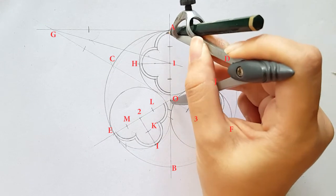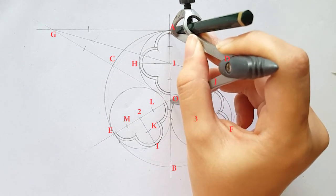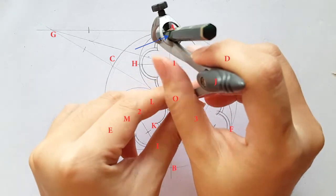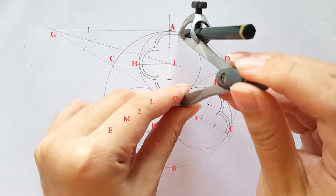Next, place your compass on point O and adjust to this point to draw a major arc outline at three sides as shown in the video.